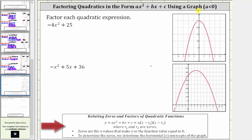If we consider the quadratic function y equals ax squared plus bx plus c, we can write this in the form a times the quantity x minus r sub one times the quantity x minus r sub two, where r sub one and r sub two are the zeros of the quadratic function.